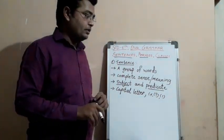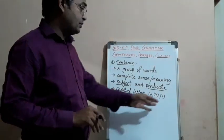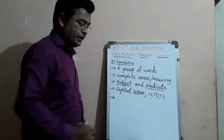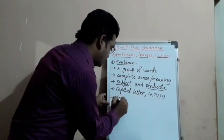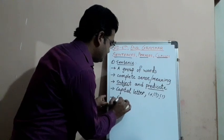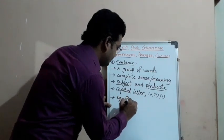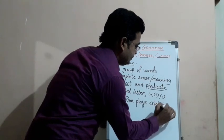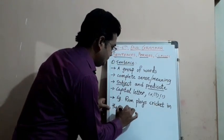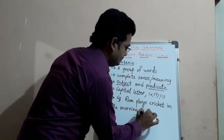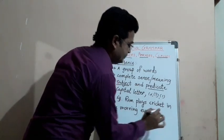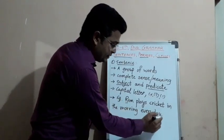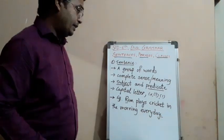Generally, for asking simple questions we use a question mark, and for showing sudden feeling we use an exclamation mark. That is our sentence. I'll explain subject and predicate with a simple example. Here I wrote a sentence: 'Ram plays cricket in the morning every day.' As you can see, the first letter is capital and the sentence ends with a full stop.